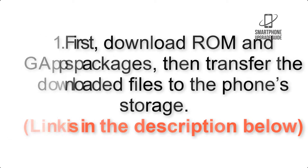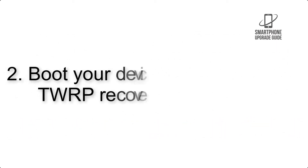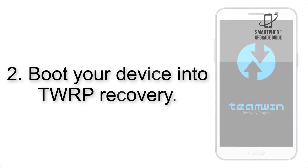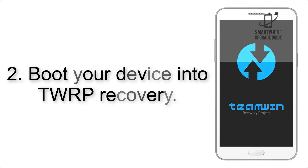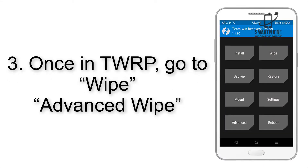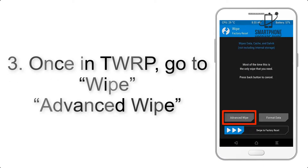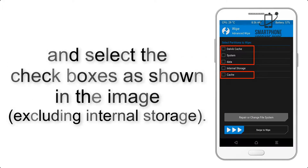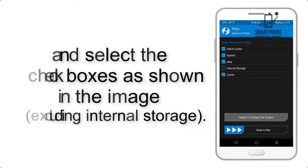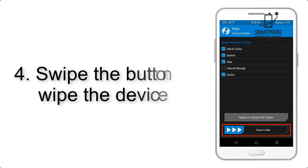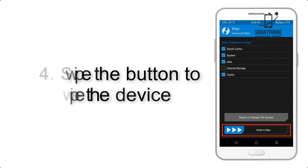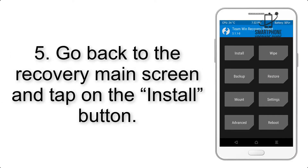Step 2: Boot your device into TWRP recovery. Once in TWRP, click on Wipe, then Advanced Wipe, and select the checkboxes as shown in the image, excluding internal storage. Step 4: Swipe the button to wipe the device.